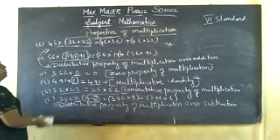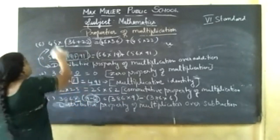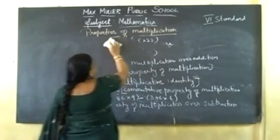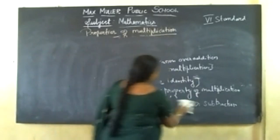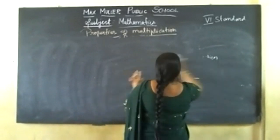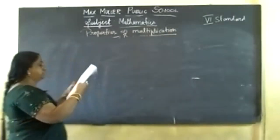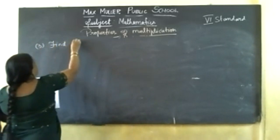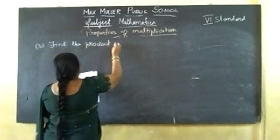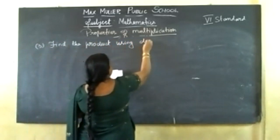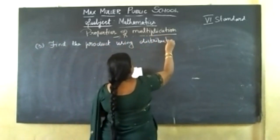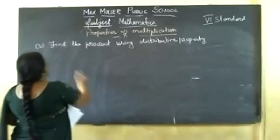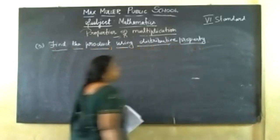Next main: we will solve by using properties how to solve sums in a very quick and easy way. That I will teach you. It's very easy and interesting. Next question: find the product using distributive property. You should use distributive property to find the product.